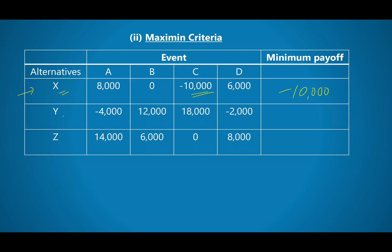Moving to alternative Y, from the look of things we have negative 4 on A, 12,000 on B, 18,000 on C, and 2,000 on D. So the minimum, the worst would be how much in the chart?